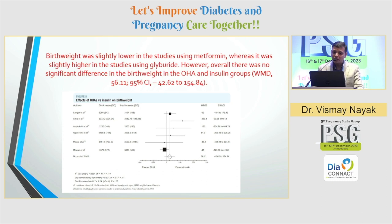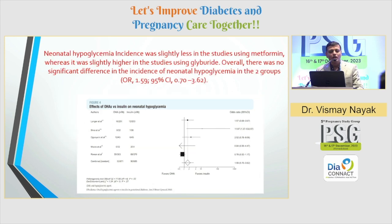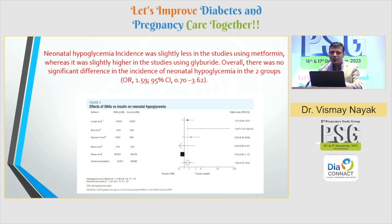What about birth weight? The birth weight was slightly lower in studies using metformin and slightly higher in studies using glyburide, but overall the difference was not statistically significant. What about neonatal hypoglycemia? Glyburide and insulin can cause neonatal hypoglycemia, which was not seen with the metformin group.